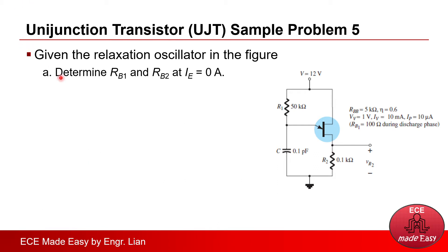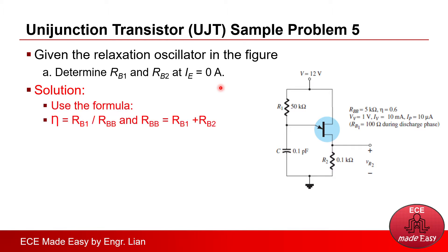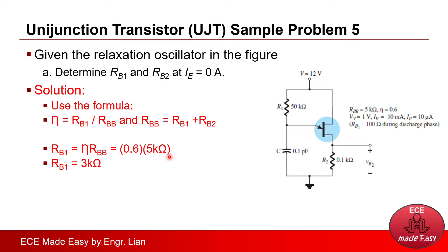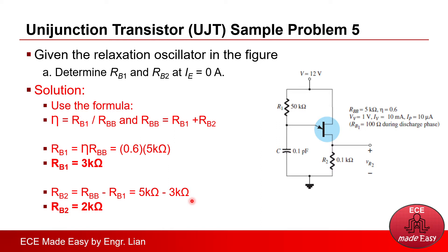First, determine Rb1 and Rb2 at Ia equal to 0 ampere. Recalling the formula from Part 1, the standoff ratio equals Rb1 over Rbb, and Rbb is the sum of Rb1 and Rb2. We determine Rb1 using the derived equation: standoff ratio times Rbb, substituting the given values gives Rb1 equal to 3 kilo-ohms. For Rb2, using Rbb minus Rb1 — with Rbb equal to 5 kilo-ohms — Rb2 is 2 kilo-ohms.